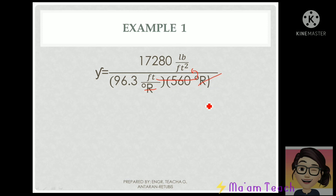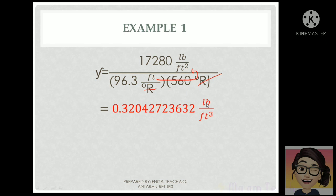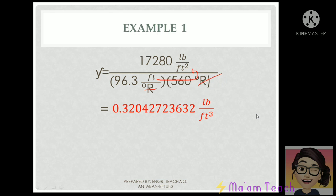Using your calculator, 17,280 divided by the product of 96.3 and 560 equals 0.32042 and so forth. Or you could round it off to three decimal places: 0.320. And the unit is pounds per cubic foot.